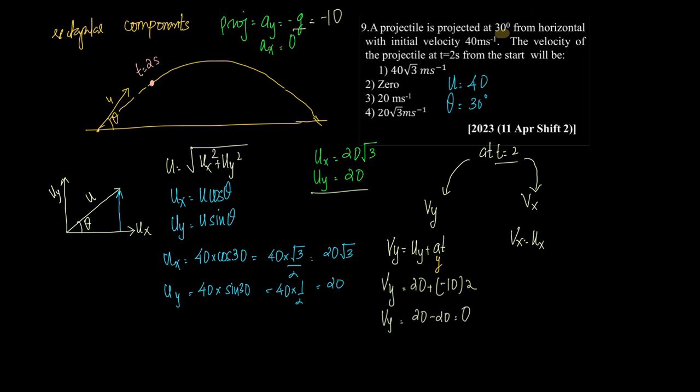Now, what is v equal to? v is equal to root of vx square plus vy square which is therefore equal to root of, what is vx square? vx square is, vx is equal to ux. So we have ux square plus what is vy? vy is 0. vy is equal to 0. Therefore, root of ux square which is equal to ux.